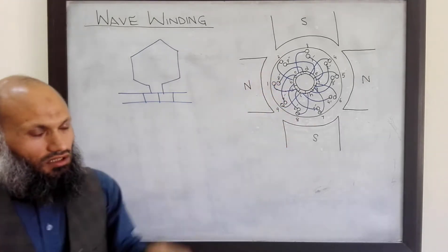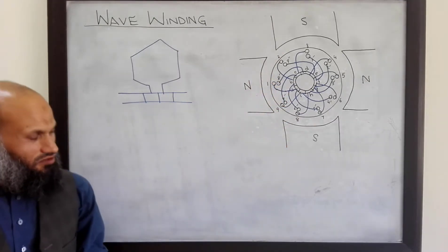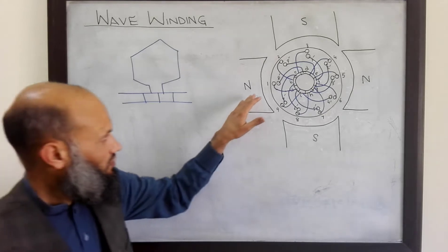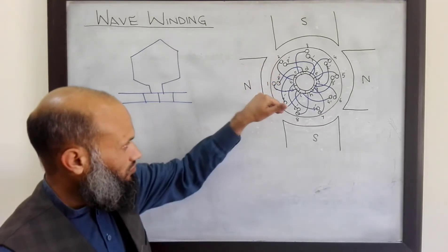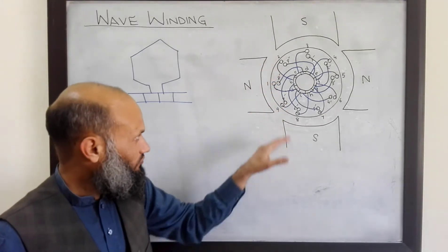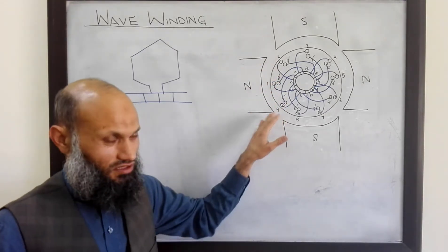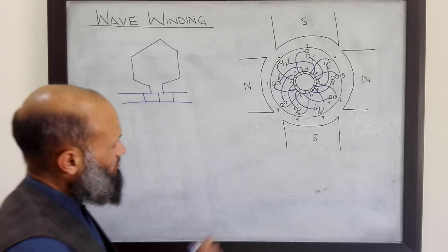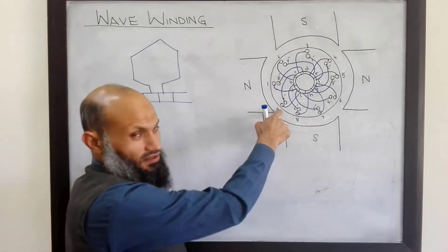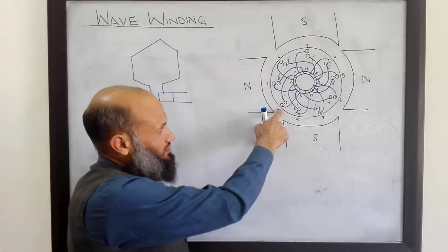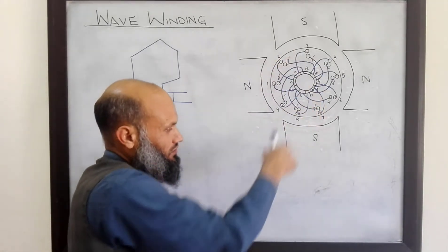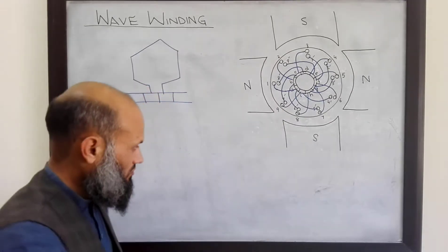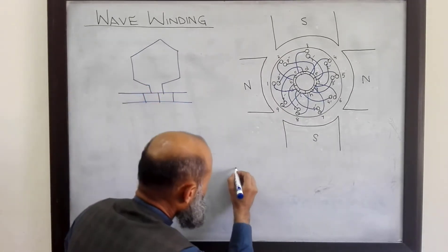With this arrangement, let's draw the equivalent winding diagram for these connections. Since there are nine coils in the rotor, we shall see 18 conductors — 18 conductors placed in the rotor.